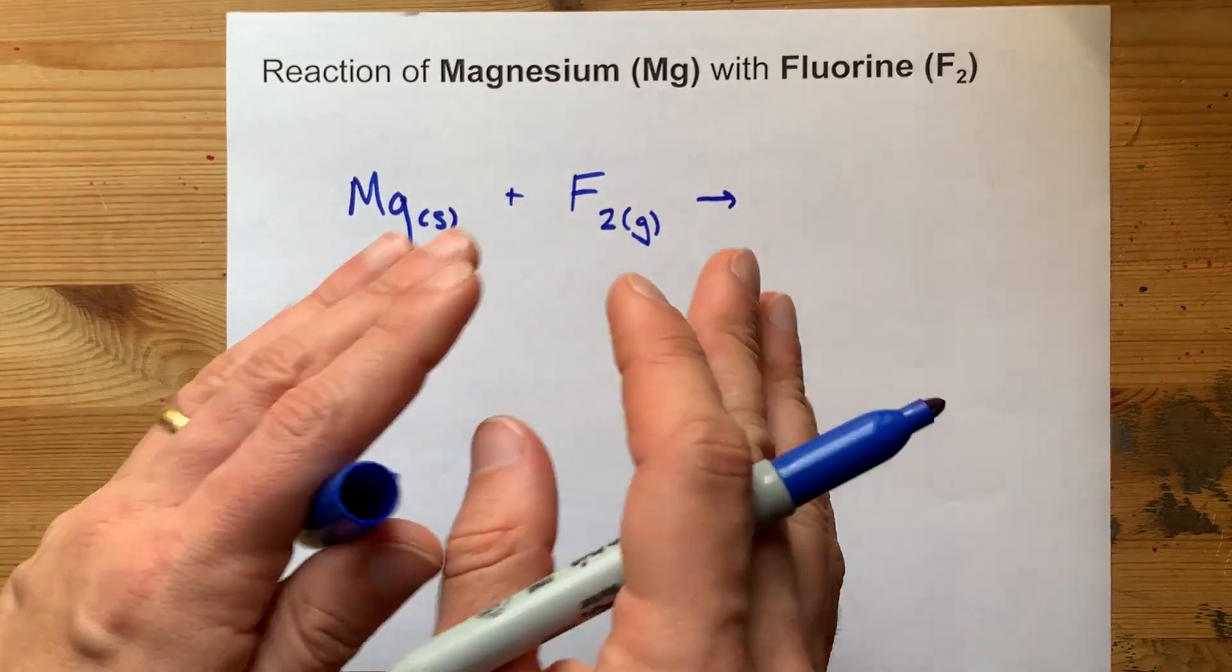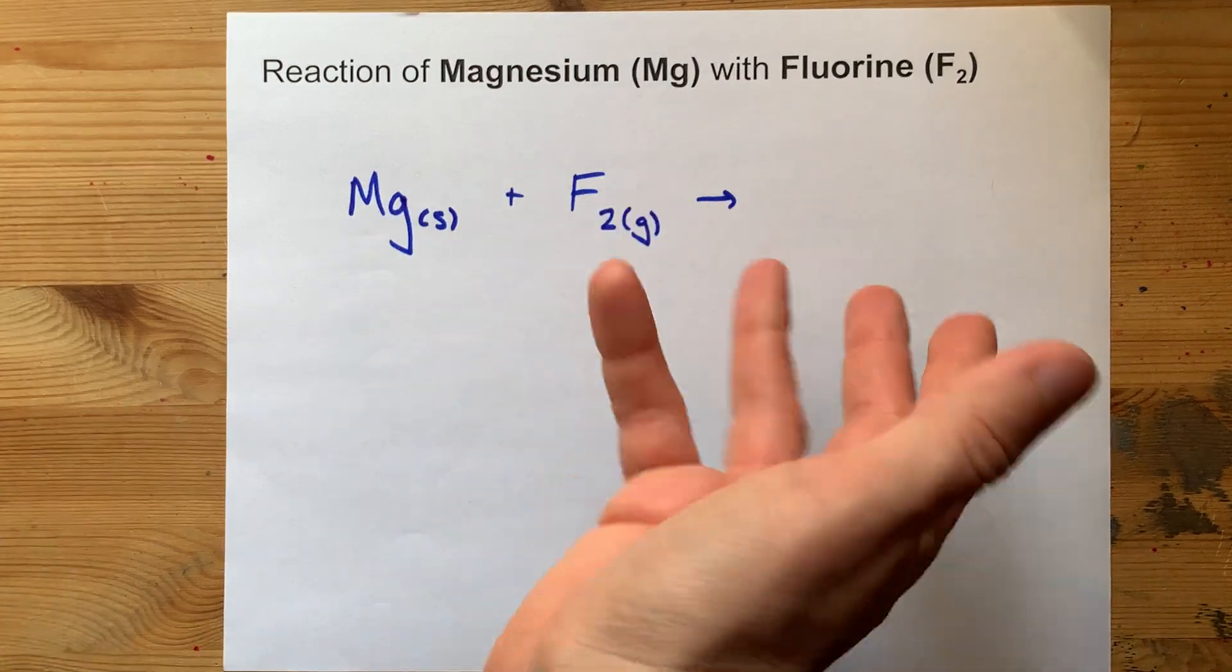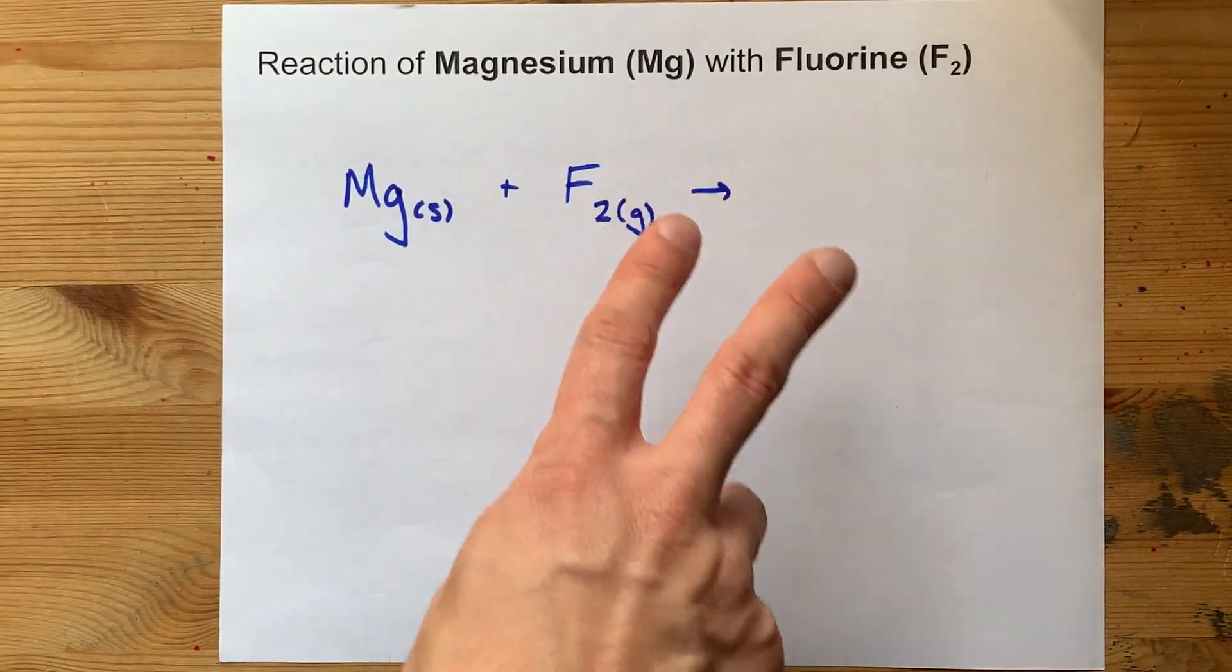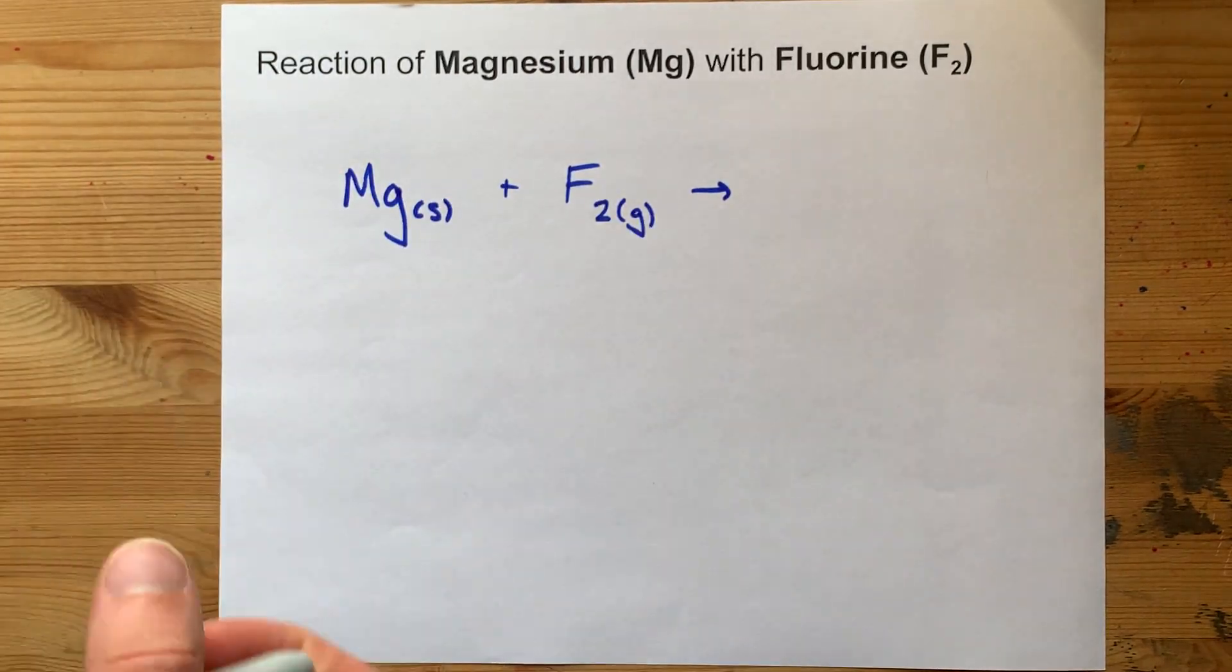Now, fluorine comes as molecular fluorine. That's F2. That's just how it is in nature. Here in Canada, we call that half-brinkle, because there's like seven elements that come like that. Hydrogen, oxygen, fluorine, whatever.